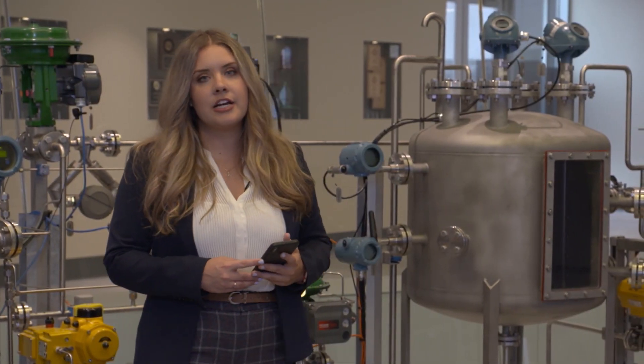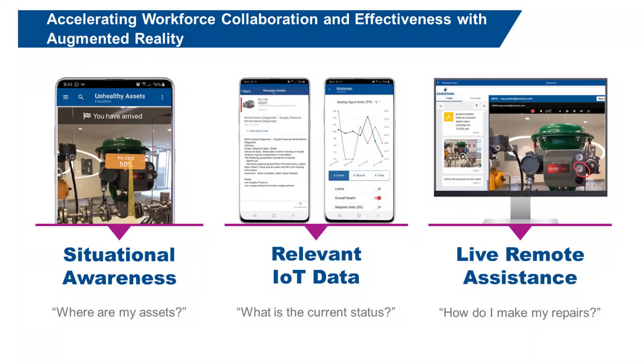In this scenario we already know exactly what's wrong with the pump, so now I'd be able to go ahead and fix the problem. But in a scenario where somebody might not know what's wrong with the pump or a different asset, they would also be able to use augmented reality to access knowledge-based material or contact a remote expert to walk them through the troubleshooting.